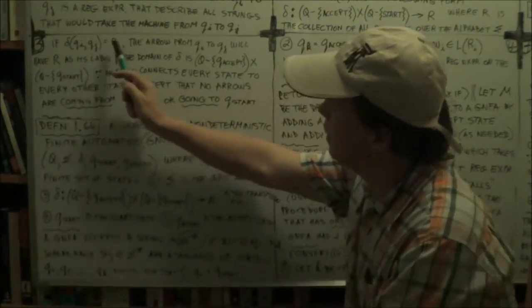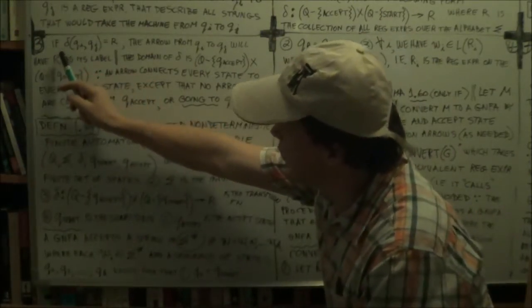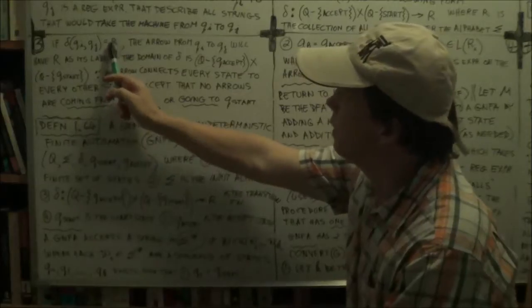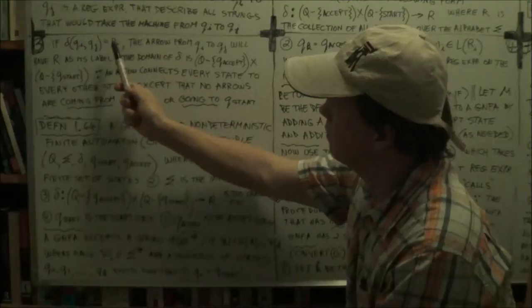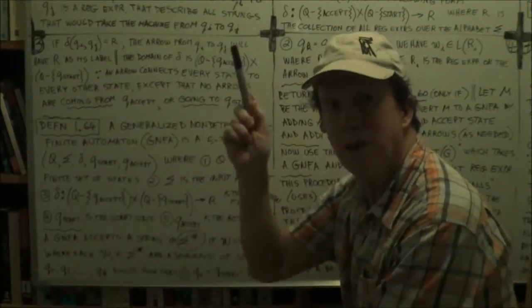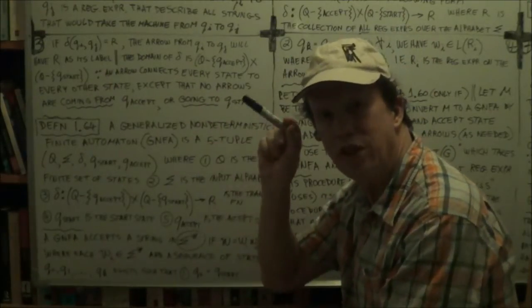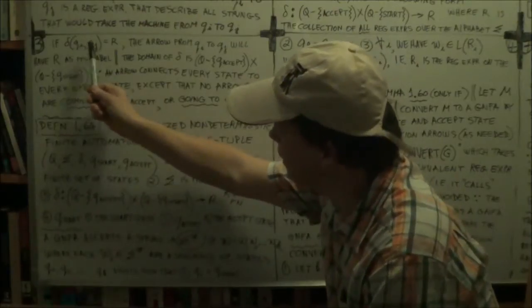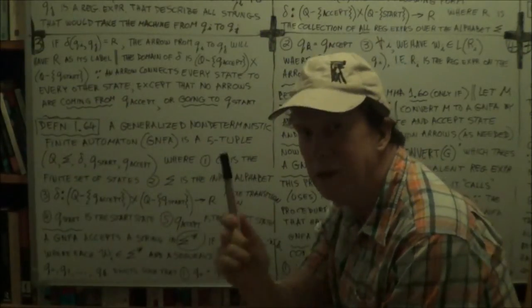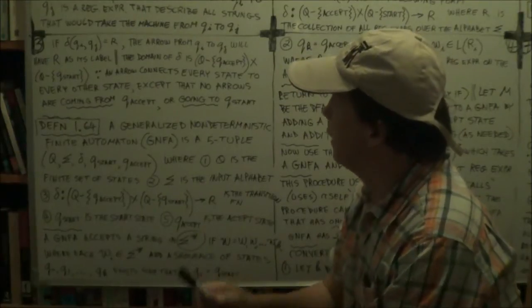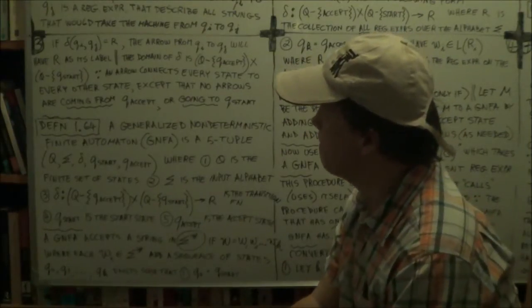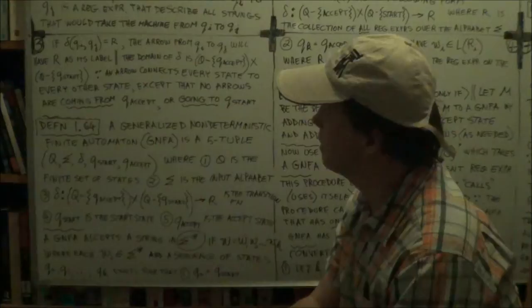So two states, and the output of this transition function delta is a regular expression, right? And which regular expression? Well, the one that is on the label, the transition arrow from this state to that state. Okay? That's important. All right.